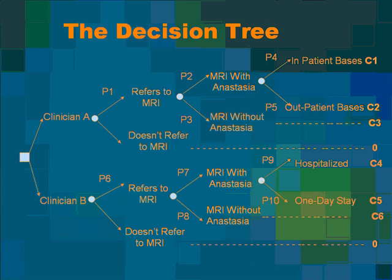Let's talk, for example, about the probabilities leading to consequence 1, or C1. There are three possible probabilities: P1, P2, and P4. Each of them is conditionally dependent on the one before. The probabilities in order are: the clinician will refer the patient to an MRI examination of the brain; the MRI examination will be done under general anesthesia; and after that, the patient will recover on an inpatient basis. The consequences will be the cost associated with the different decisions.